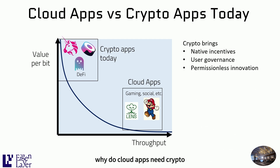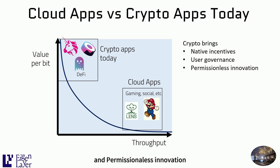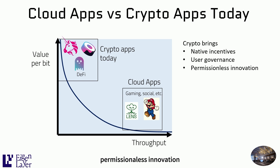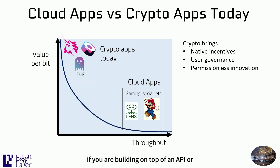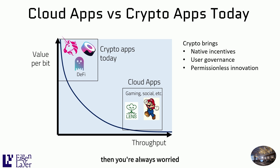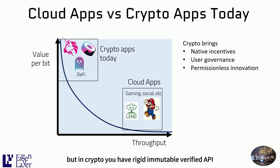Why do cloud apps need crypto? Crypto brings native incentives, user governance, and permissionless innovation. Permissionless innovation is one of our favorite topics — how do we ensure that anybody with great ideas can build on top of existing applications? If you're building on top of an API of Twitter or Facebook, you're always worried: when is this API going to shut off? When am I going to be internalized into the core protocol? But in crypto, you have rigid, immutable, verified APIs that can be built on top of.